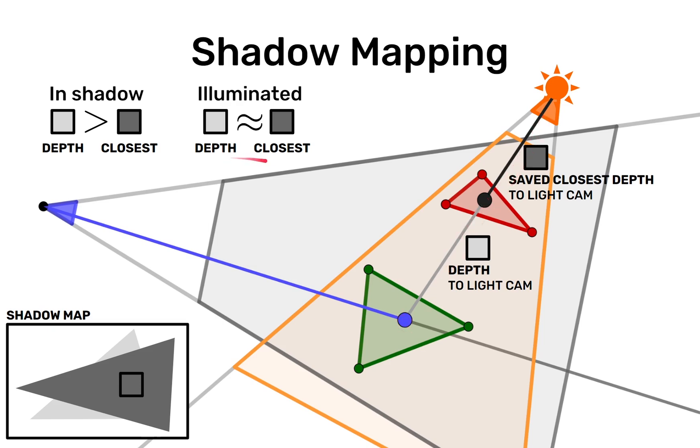However if our depth is very similar or equal to the closest value then we are not in shadow because in that case our fragment is the closest value. So that needs to be illuminated.